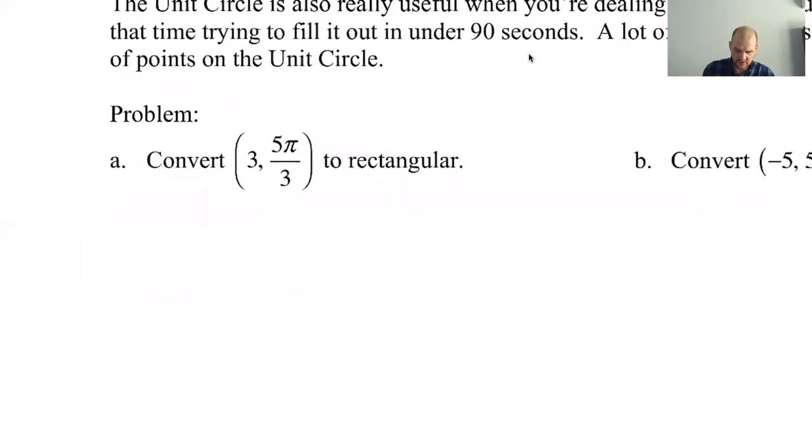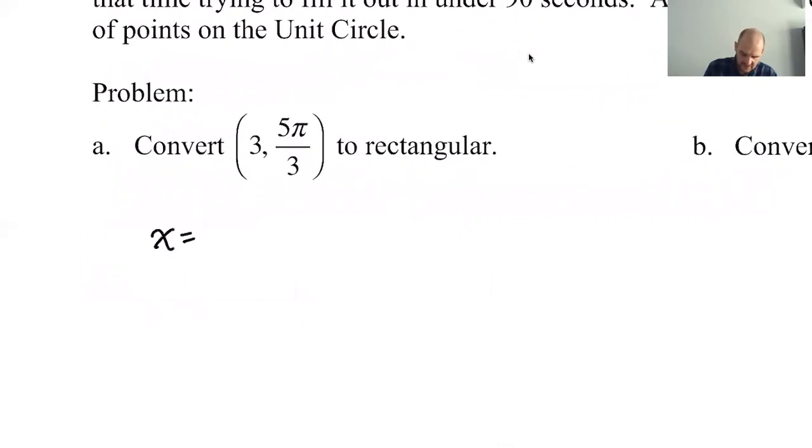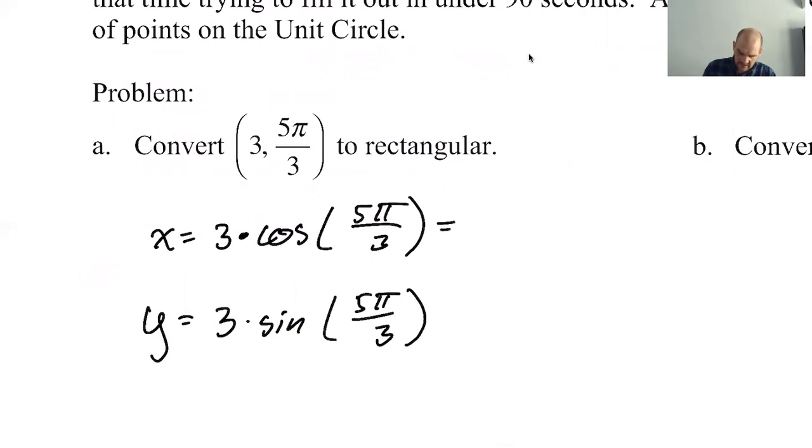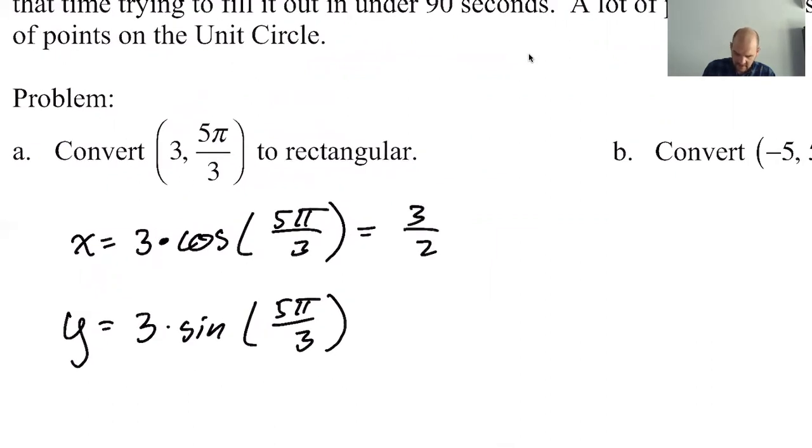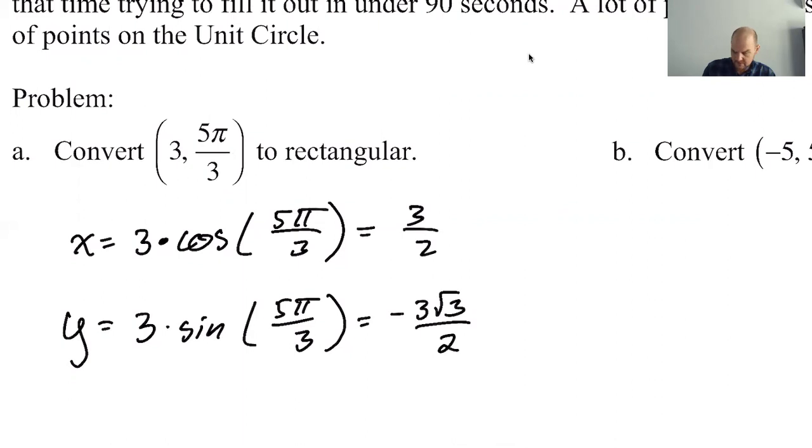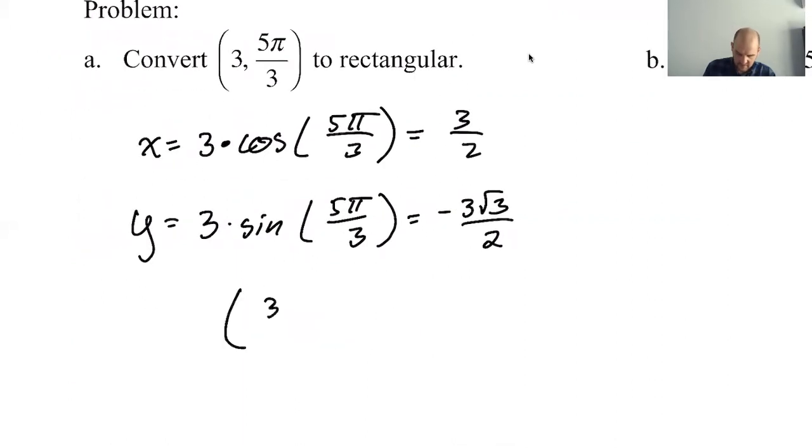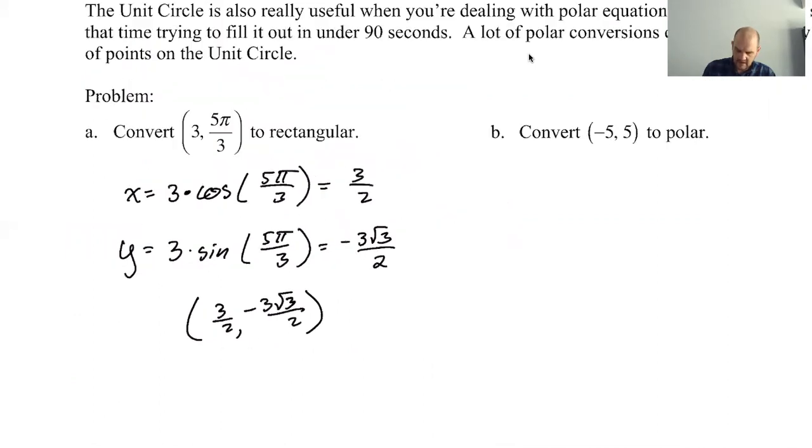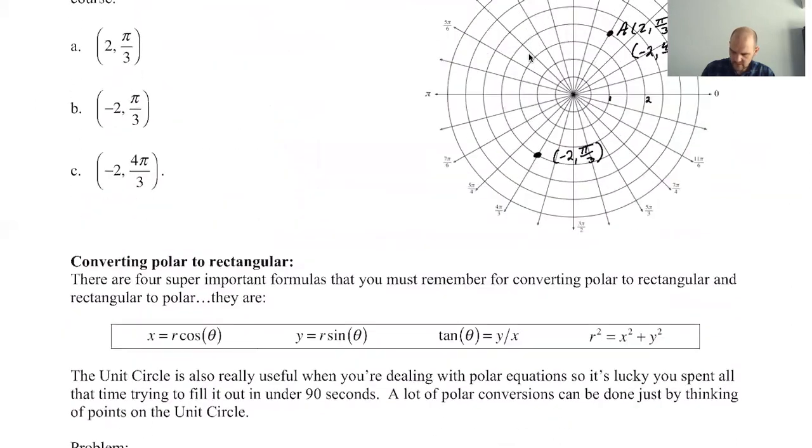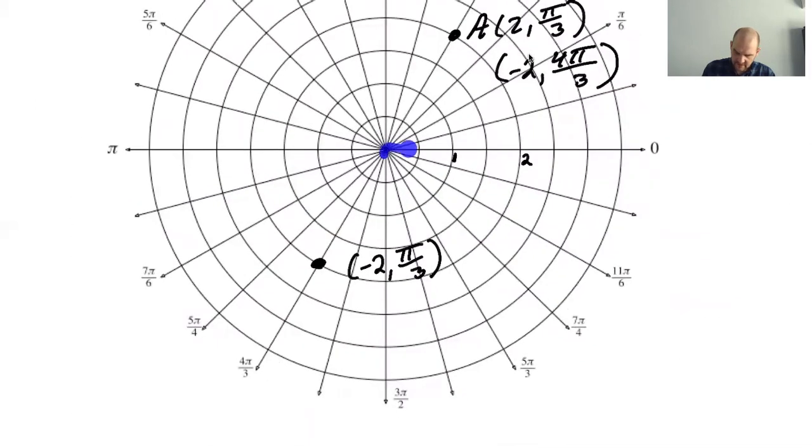Let's see if we can convert. Converting a point: we're gonna have X is r cosine, so 3 times cosine of 5π/3—gotta know your unit circle—then Y is r sine, so 3 times sine of 5π/3. So this will be: the cosine of 5π/3 is 1/2, so 3/2, and then the sine of 5π/3 is negative √3/2, so we get that. So I would write my final answer as an ordered pair: (3/2, -3√3/2).